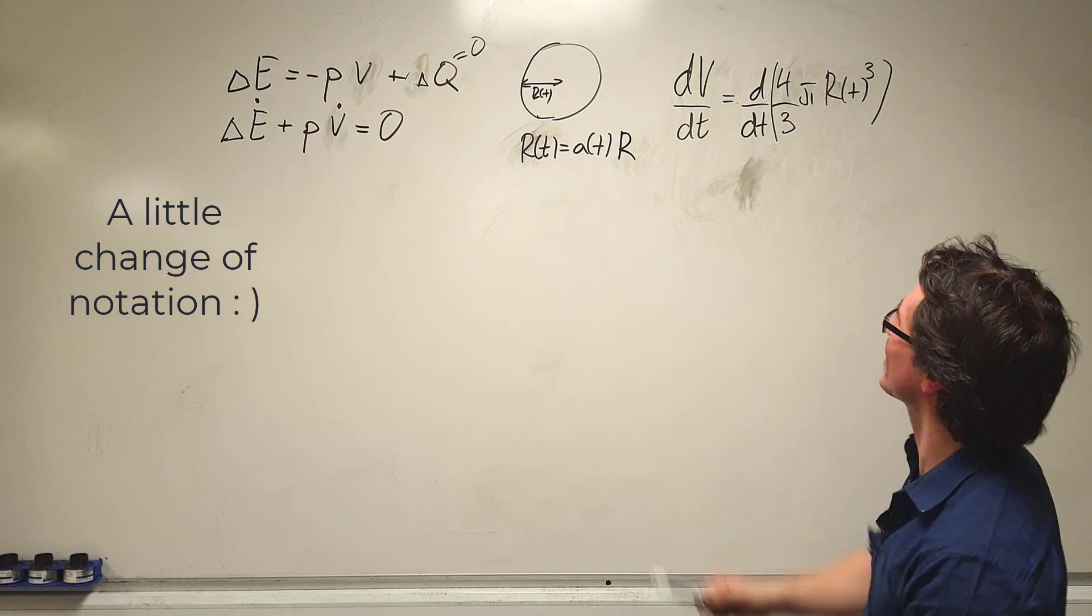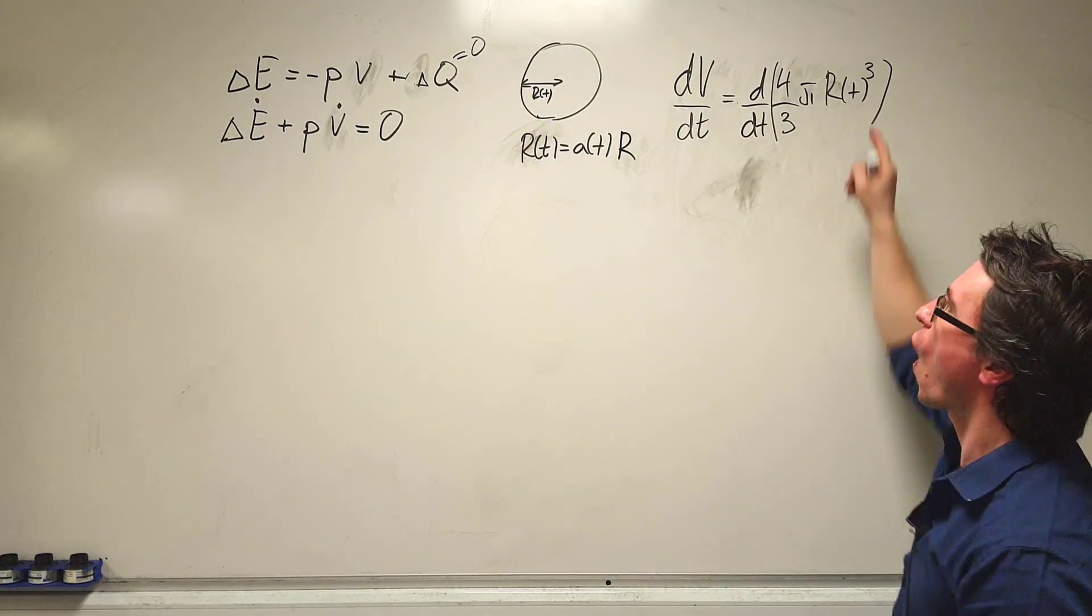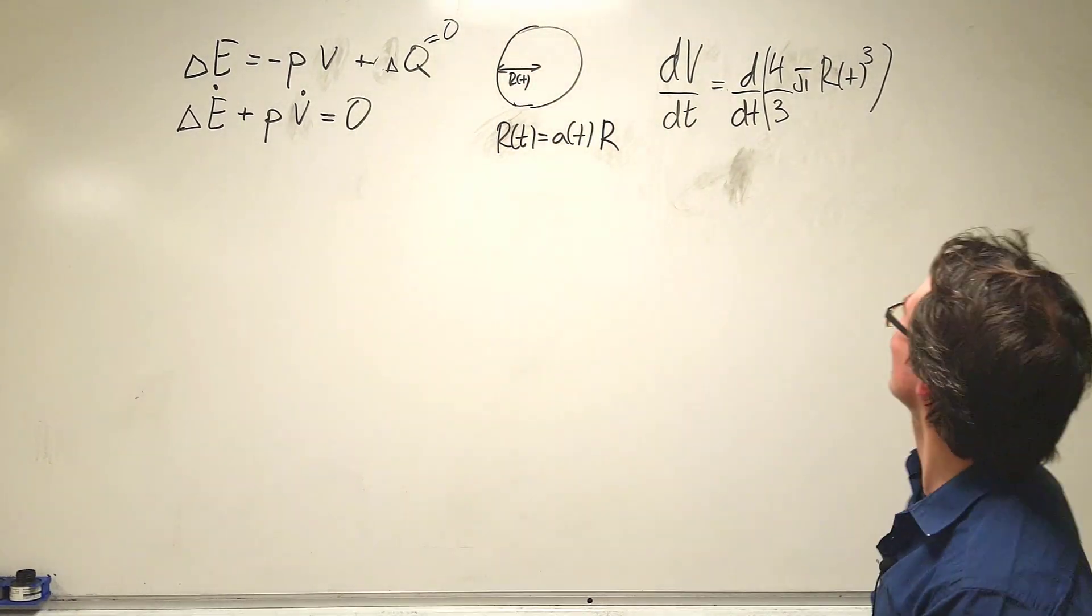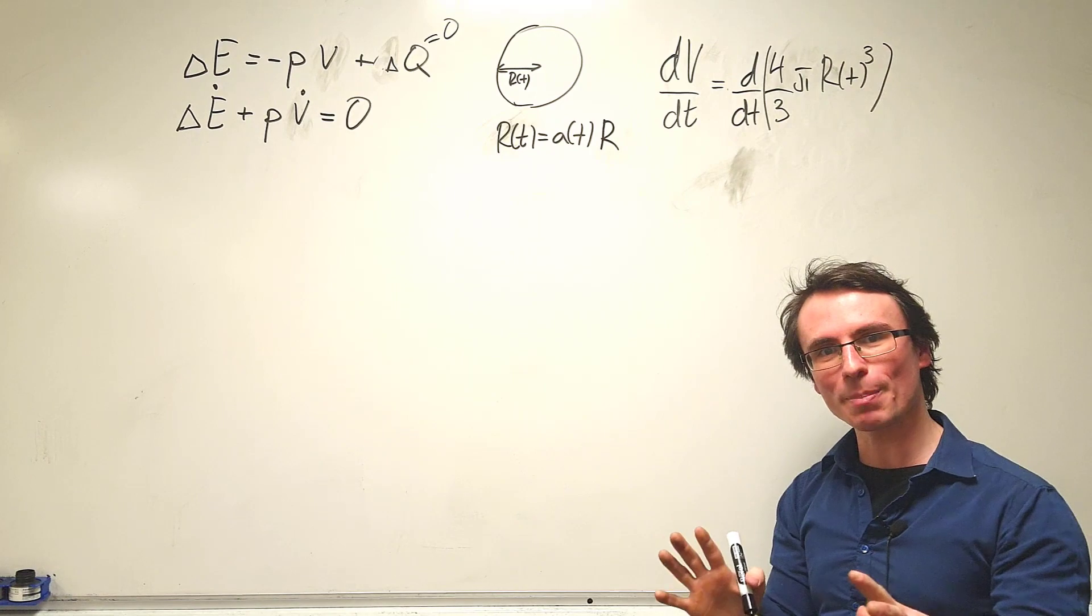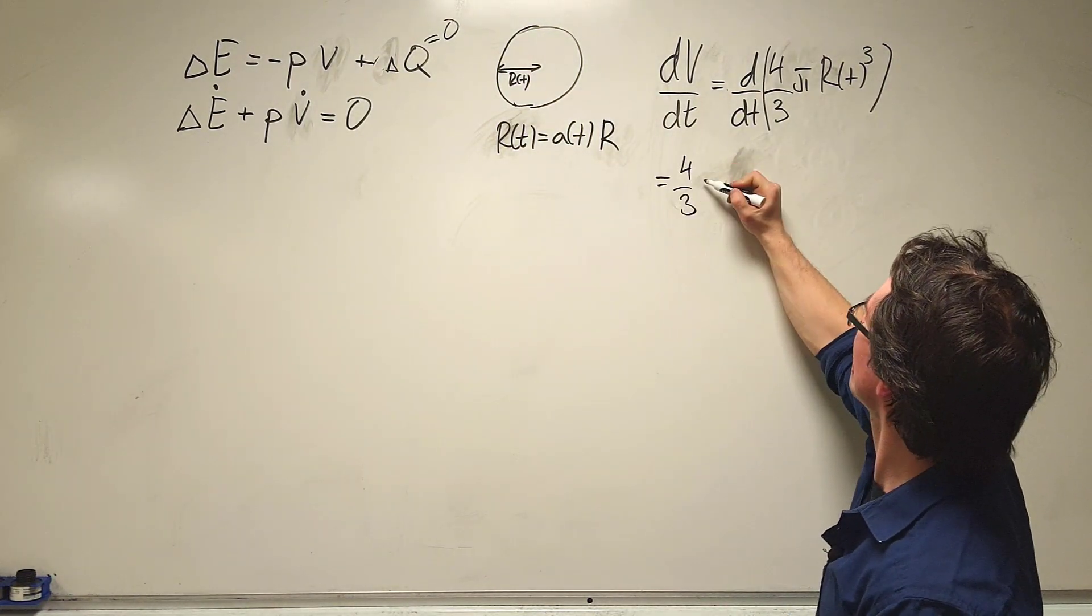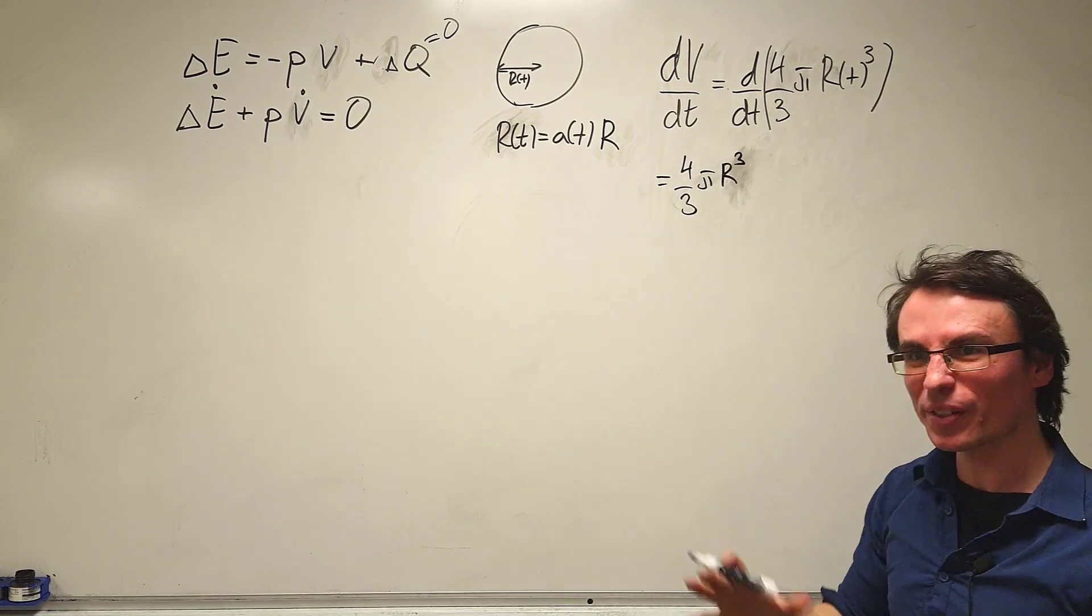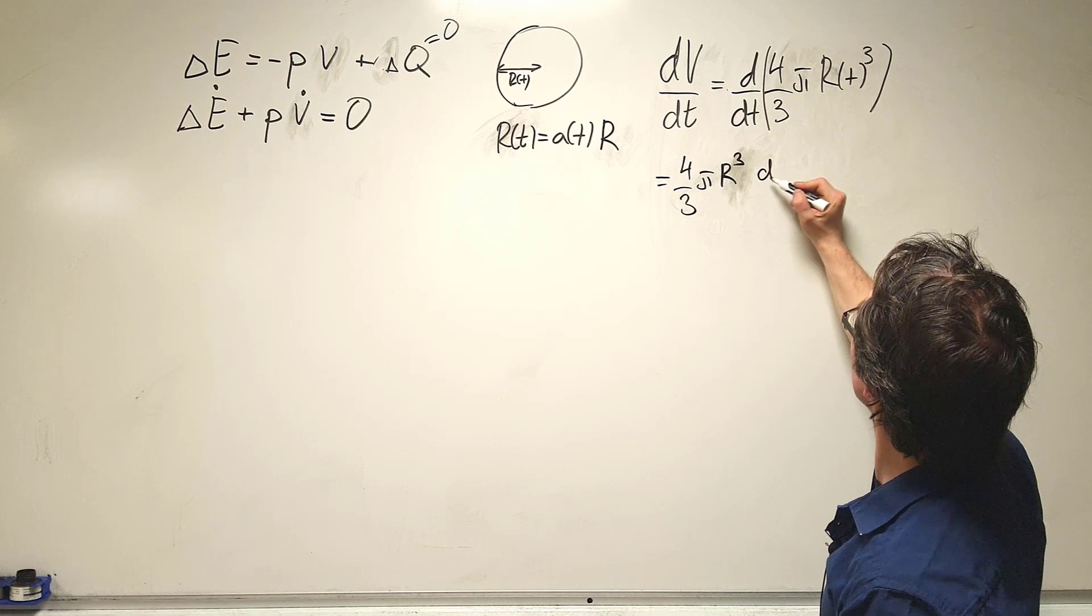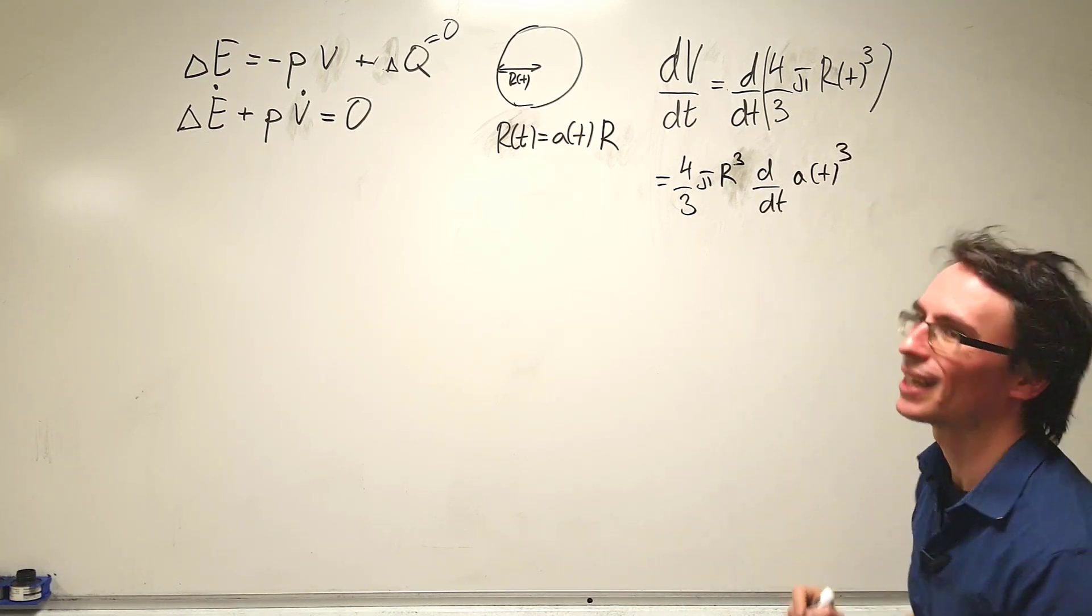dV/dt will be equal to d/dt of this spherical section of volume, which is four thirds pi r(t) cubed. But only this factor here depends on time. Because r(t) equals a(t) times r, we can take everything that doesn't depend on t outside of the derivative. So this equals four thirds pi r cubed, which is just a constant, times d/dt of a(t) cubed.